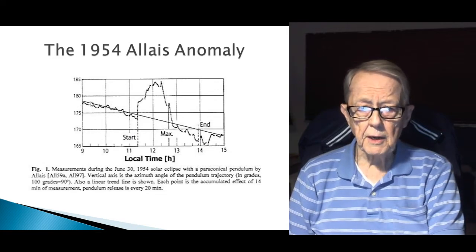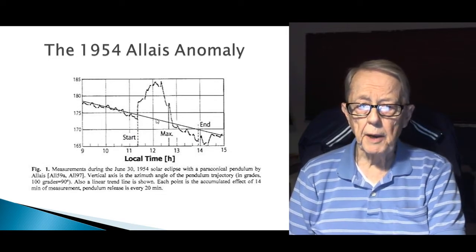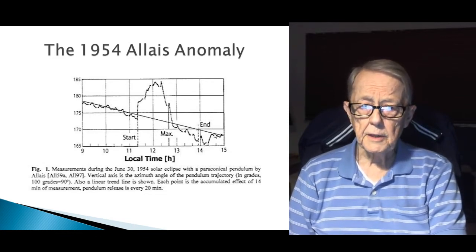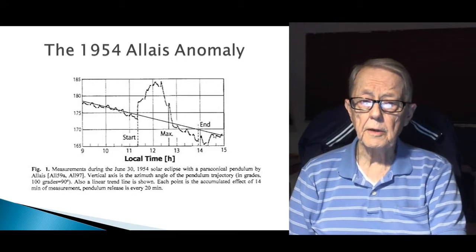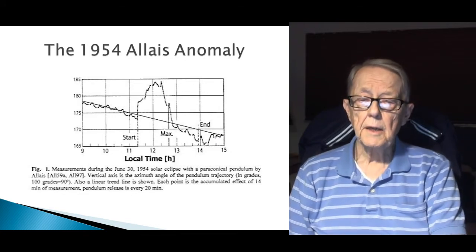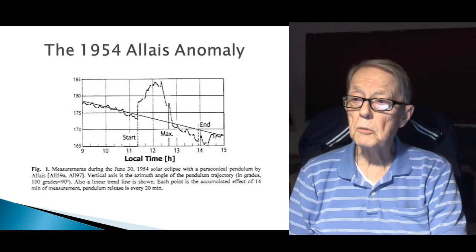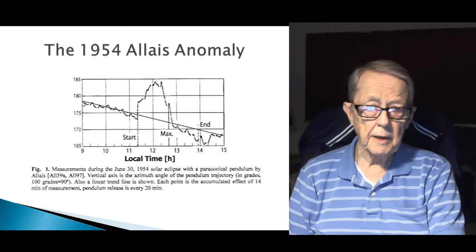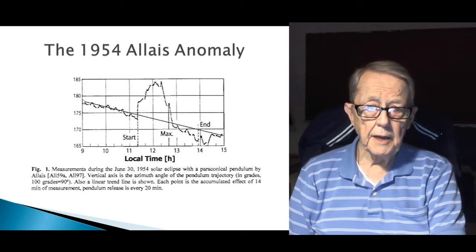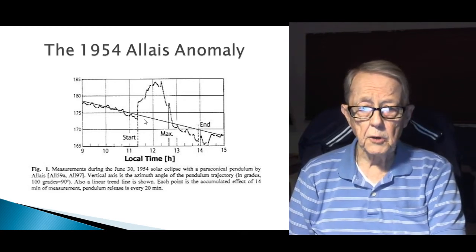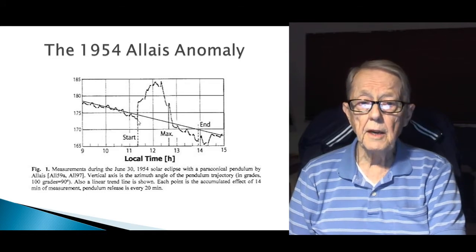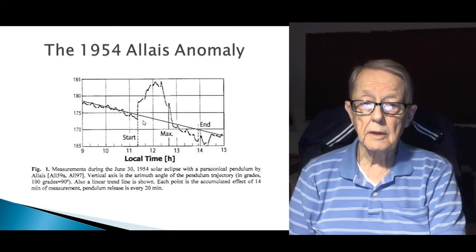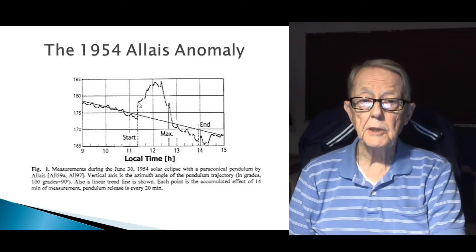You can see the eclipse is marked on this screen. Here's the start of the eclipse, and this is when the eclipse was at its total. And then here is the end of the eclipse. The straight line indicates how you would expect the pendulum to move as the Earth moves counterclockwise. Then the pendulum appears to move clockwise.